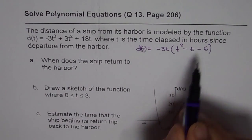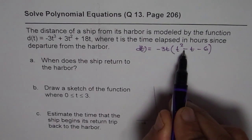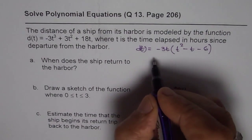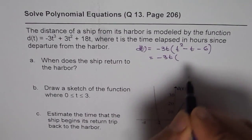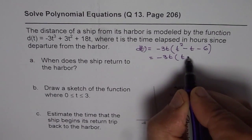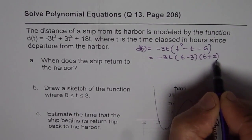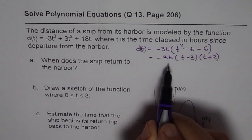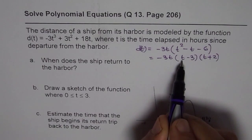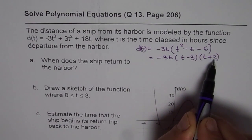That gives you a cubic equation with zeros at t equals 0, t equals 3, and t equals minus 2.